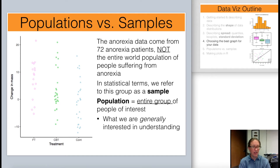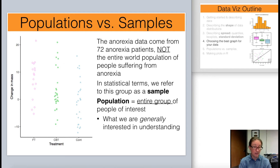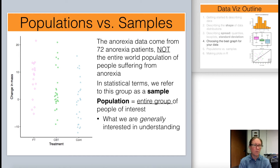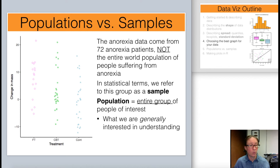In contrast, a statistical population is the entire group of people that are of interest. One of the concepts we like to think about a lot as scientists is the concept of generalizability. So are we just interested in understanding these 72 patients, or are we actually interested in something more general — will these different types of therapies have different impacts on patient outcomes? Most of the time we're interested in understanding something about a population, but we can only sample from that population, and our goal is to gain some general understanding about what's going on with that entire population.